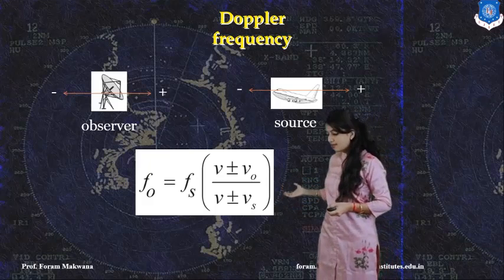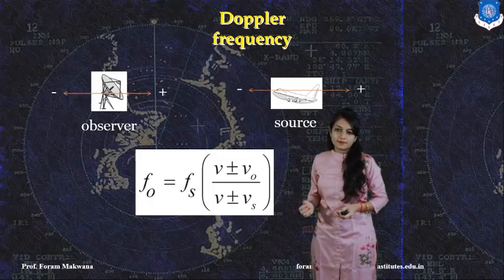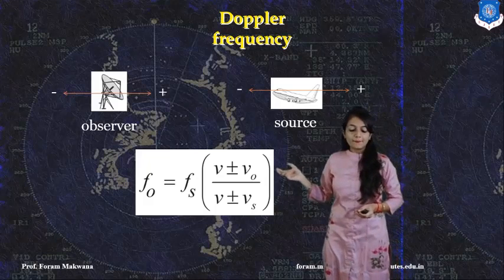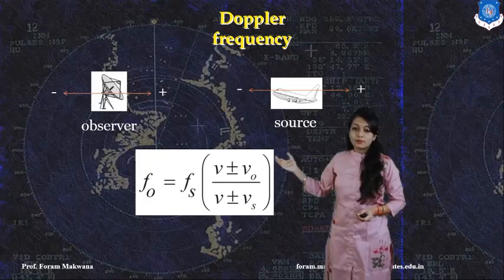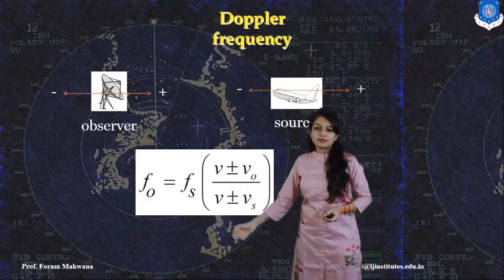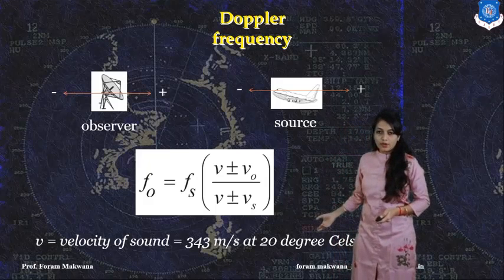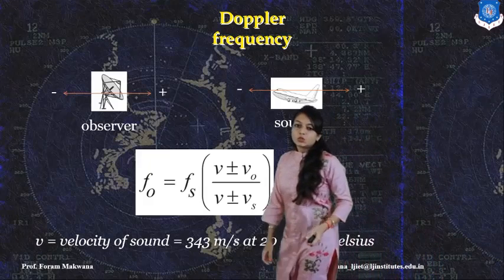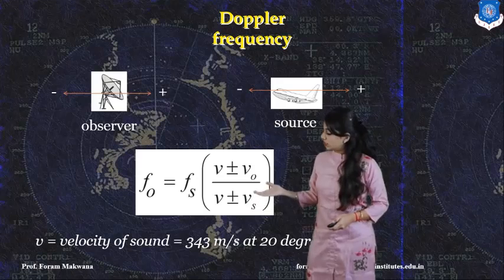The formula for Doppler frequency is: F0 equals Fs multiplied by (V plus or minus V0) divided by (V plus or minus Vs), where S represents the source and O represents the observer. So F0 is the observed frequency, Fs is the source frequency, V0 is the velocity of the observer, plus or minus, and V is the original velocity divided by the velocity of the source. The original velocity is in terms of sound. This is the formula for the Doppler frequency.